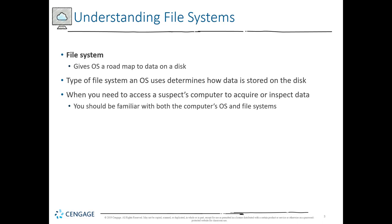A file system basically allows the operating system to map the location of data on a drive. When we talk about a drive, it's a storage portion with partitions and storage sections. The file system says where each part of a data file might be. Think of a library system — the file system is like the index cards telling you where a specific piece of data or a book is located.